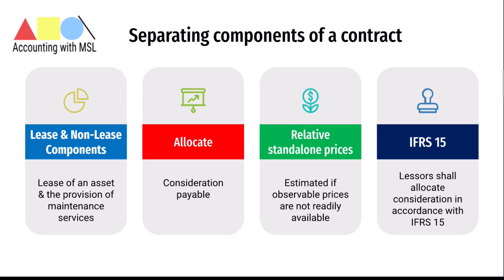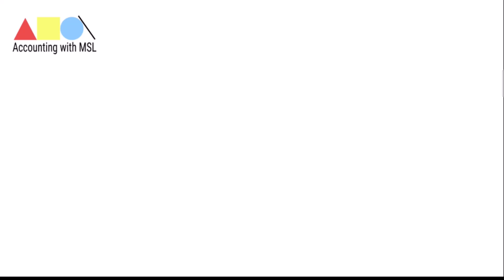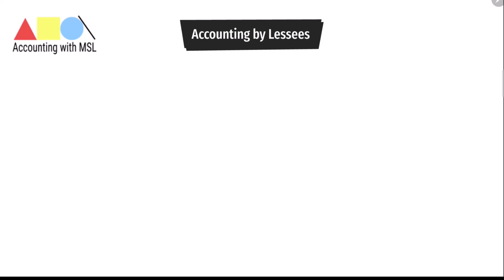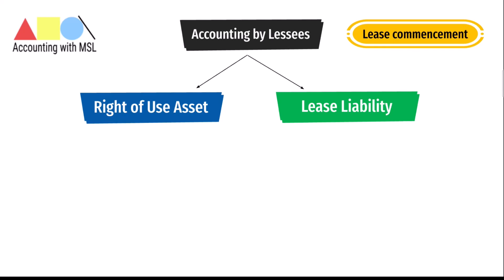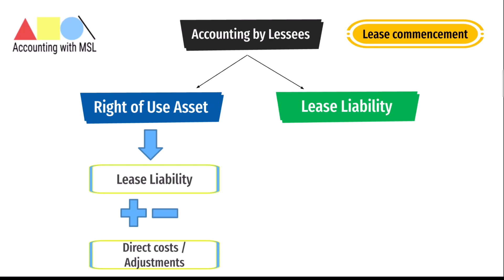How are lessees required to account for leases under IFRS 16? Upon commencement of the lease, a lessee recognizes a right-of-use asset and also recognizes a lease liability. The right-of-use asset is initially measured at the amount of the lease liability plus any initial direct costs incurred by the lessee. Adjustments are also required for things such as lease incentives, payments at or prior to commencement, and restoration obligations or similar other obligations.